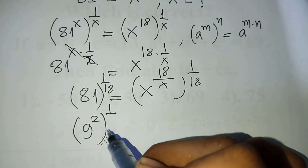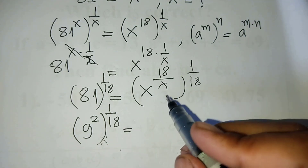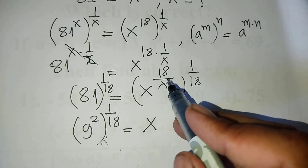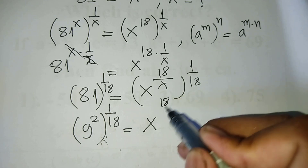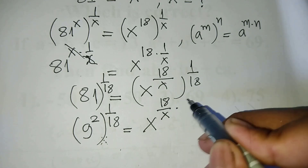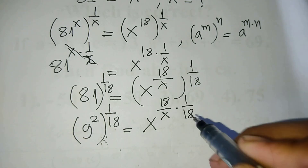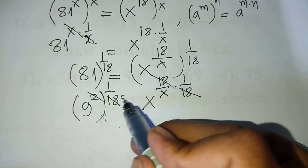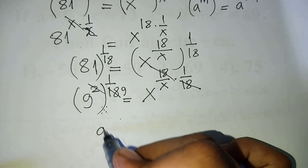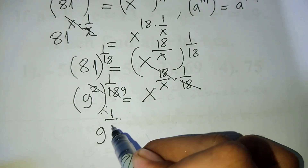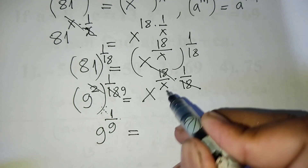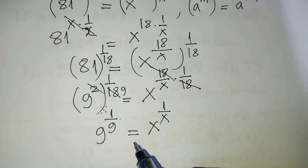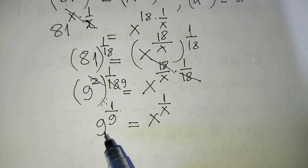And on the right side we have a^(1/8). Simplifying the left side: (9²)^(1/18) = 9^(2/18) = 9^(1/9). So we get 9^(1/9) = a^(1/8).